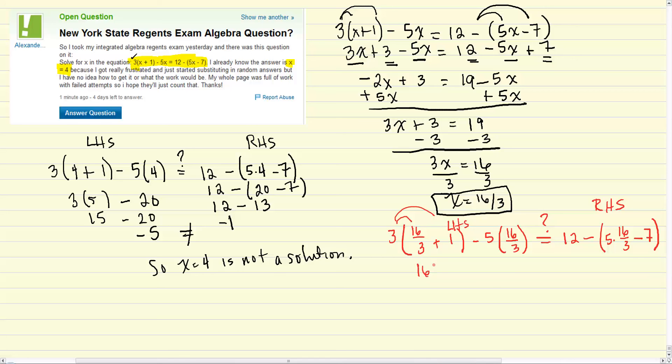So that'll be 16 plus 3 minus 5 times 16 is 80 thirds. So 19 minus 80 thirds. I think that's 57 minus 80 over 3. And so that'll give you negative 23 thirds. So left-hand side equals negative 23 thirds.